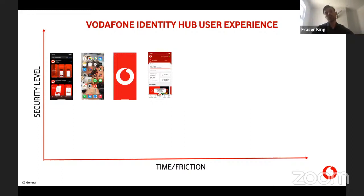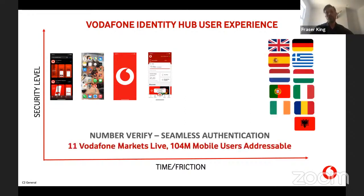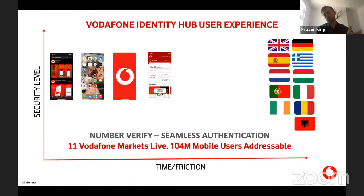What you're seeing is a seamless authentication journey — removing friction from the user experience without compromising security for the consumer or the service provider. Vodafone has launched this service across 11 markets, with over 104 million mobile users now accessible. Think of it as taking what an authenticator app does and building that authenticator into the network layer, which you then build into your application — completely seamless, zero friction to the end user, but creating a much higher level of security than sending one-time passwords out in the open.